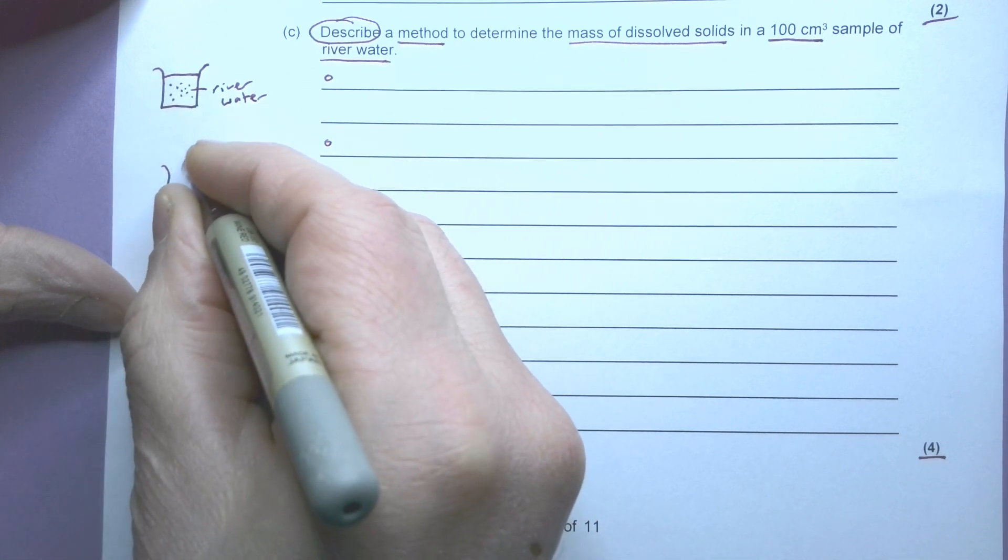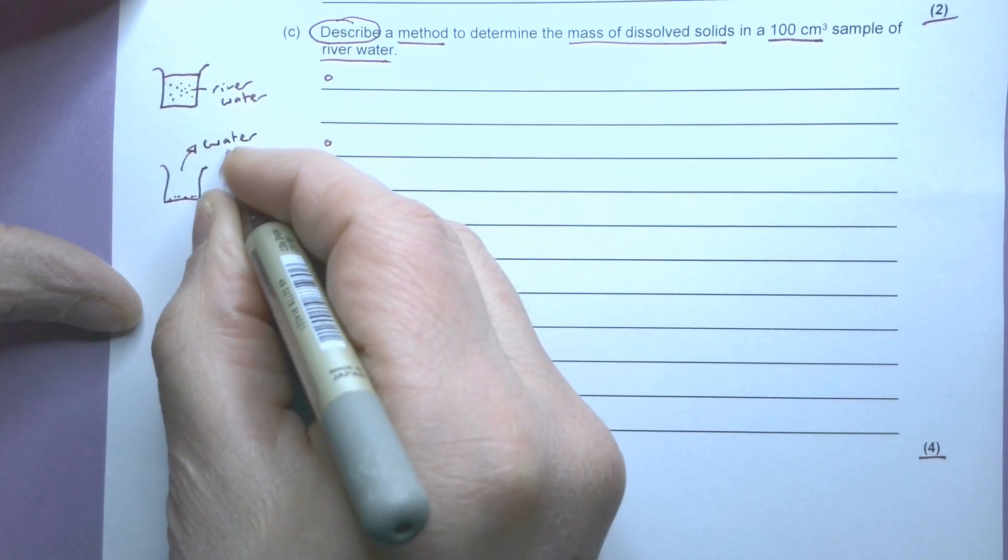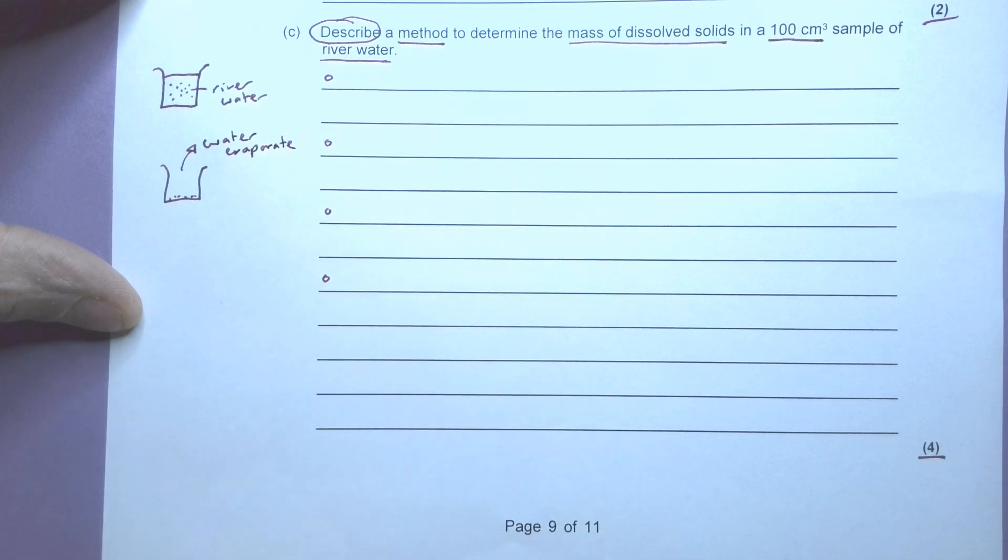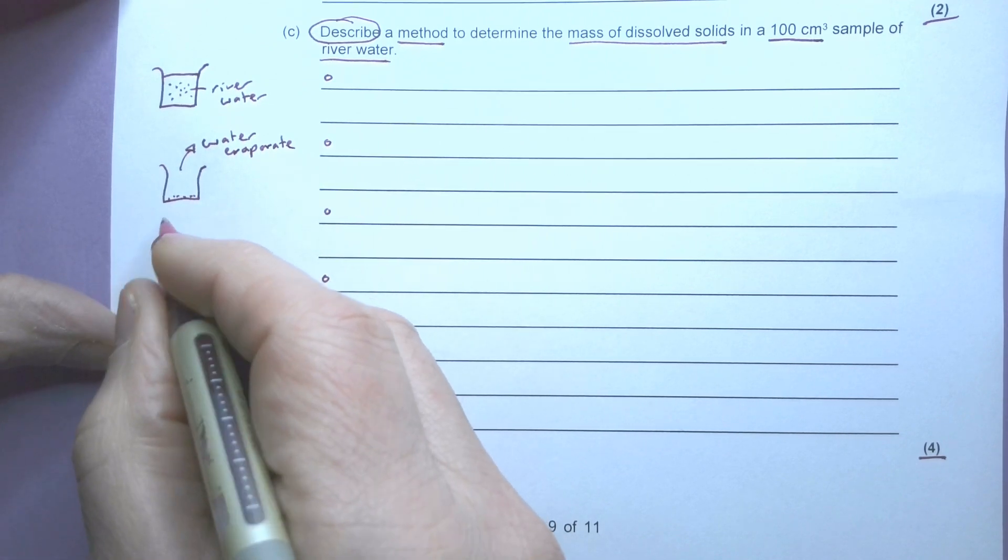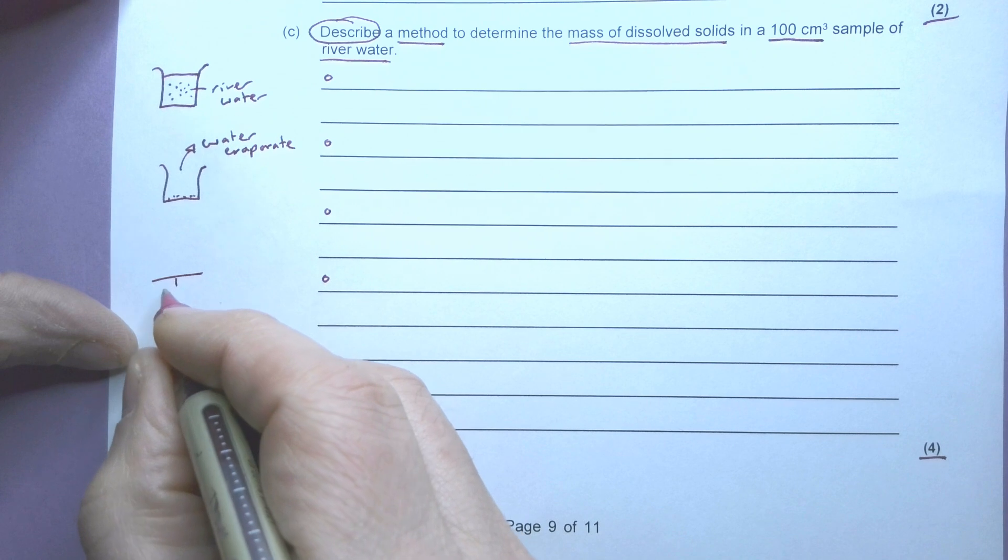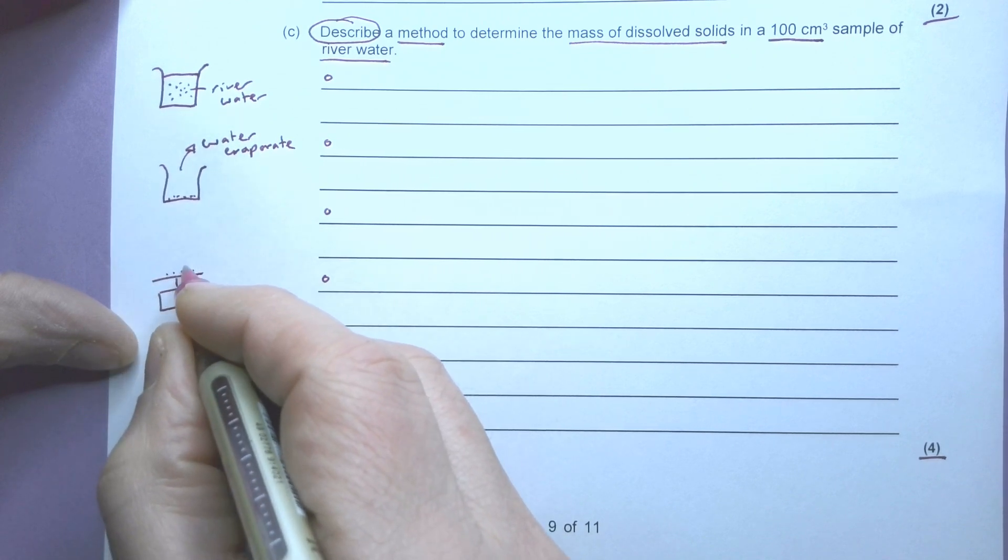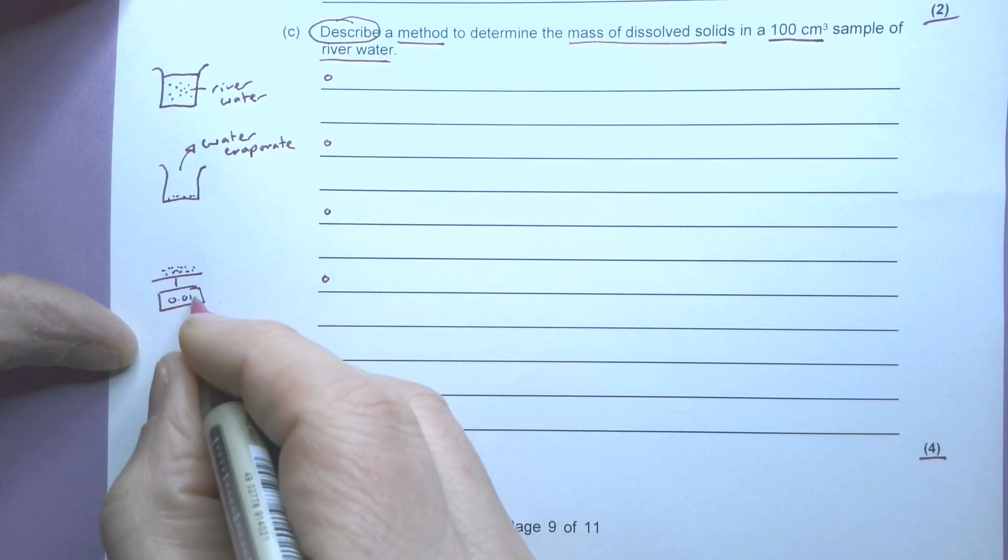So I'm going to let the water evaporate, or I might boil it - it doesn't really matter - but I need to evaporate off or boil off, and I'm then going to weigh to find the mass of those salts, those dissolved things there.